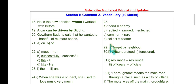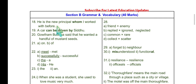Now let's go to Section B: Grammar and Vocabulary. Question 18: Combine the following sentences using 'whom.' Answer: 'He is the new principal whom I worked with before.' The word 'him' is not necessary here — we use 'whom' because we can eliminate the word 'him.' Question 19: Passive voice — 'Siddhu can drive a car' becomes 'A car can be driven by Siddhu.'